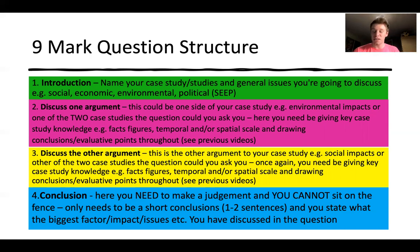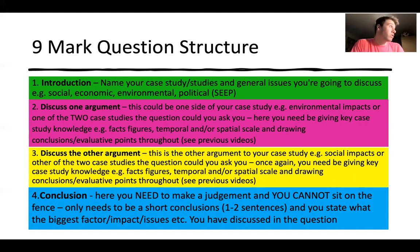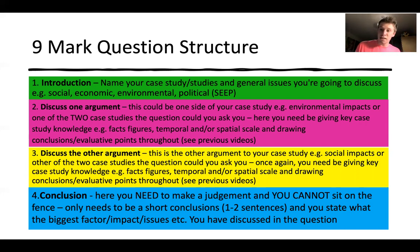For the third paragraph, discuss a contrasting argument. If the first paragraph covered environmental impacts, the second might cover social or economic impacts — for example, the social benefits of developing sustainable cities such as less stress due to a nicer environment, or savings from renewable energy sources and lower pollution costs. Repeat the same structure: facts and figures, spatial and temporal scale, and evaluative conclusions. Paragraphs two and three are essentially the same structure, just using different sides of your argument.